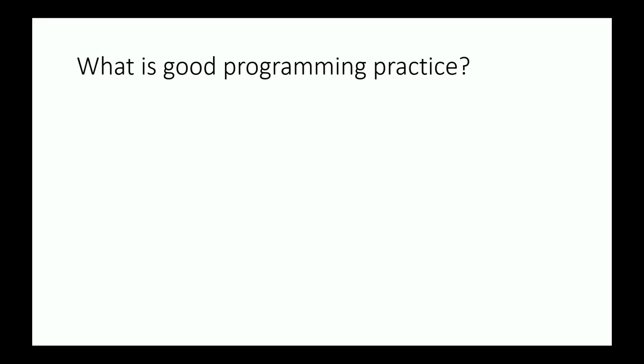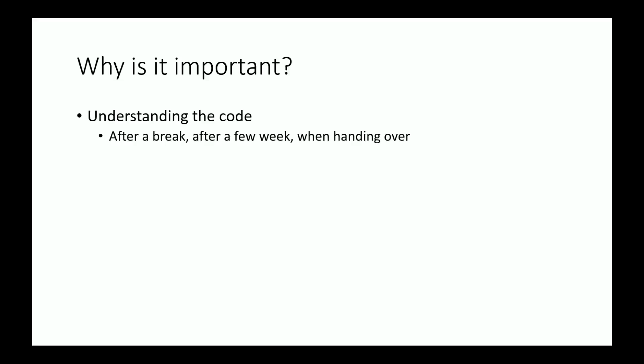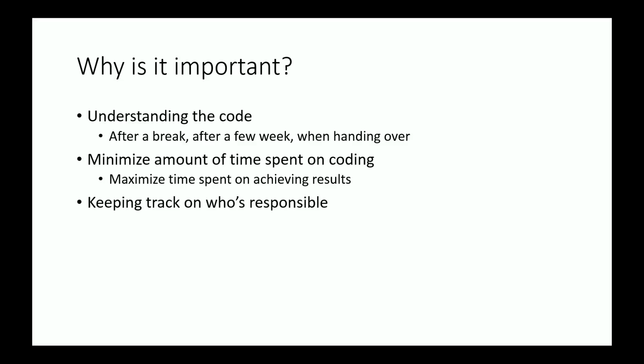So what is good programming practice? Well, it's essentially two things. It's that you're supposed to be writing code in a way that is understandable and also that you're supposed to be writing code in a way that is time effective. And why is it important? Well, one of the most important reasons is that by writing your code in a good way, you will make your code understandable. For example, if you return after a break or after a few weeks or when handing your code over to someone else. It's also important so that you can minimize your time spent on coding and focus more on getting results or at least the deeper insights from your results. And it's also good so you can keep track of who's responsible for what part of the code.